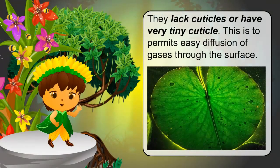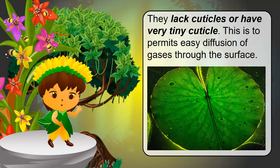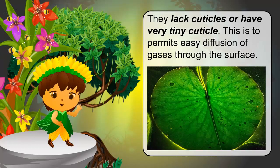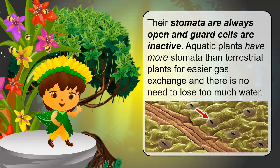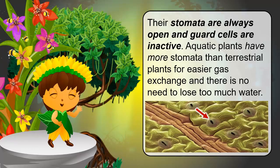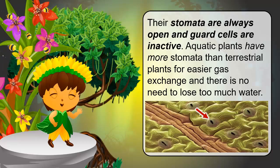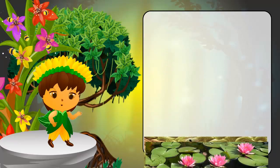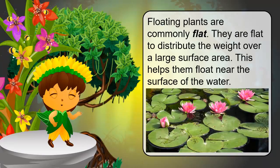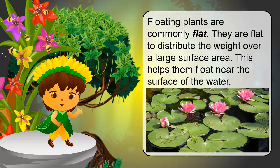Unlike terrestrial plants, aquatic plants lack cuticles or have very tiny cuticles. This is to permit easy diffusion of gases through the surface. Their stomata are always open and guard cells are inactive. Aquatic plants have more stomata than terrestrial plants for easier gas exchange, and there is no need to lose too much water. Floating plants are commonly flat to distribute weight over a large surface area, which helps them float near the surface of the water.